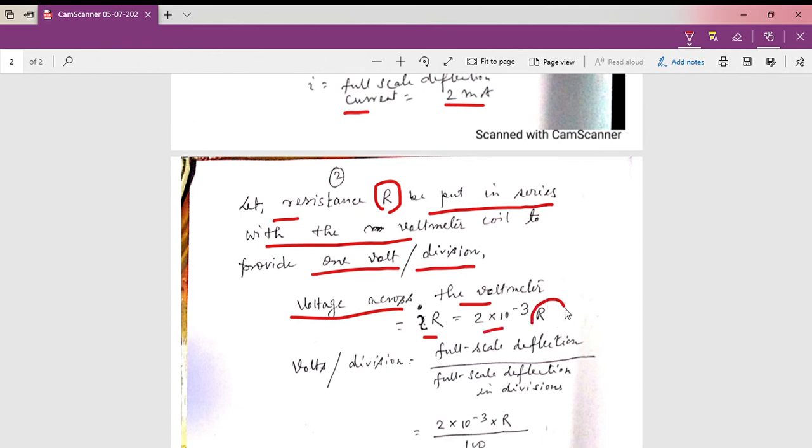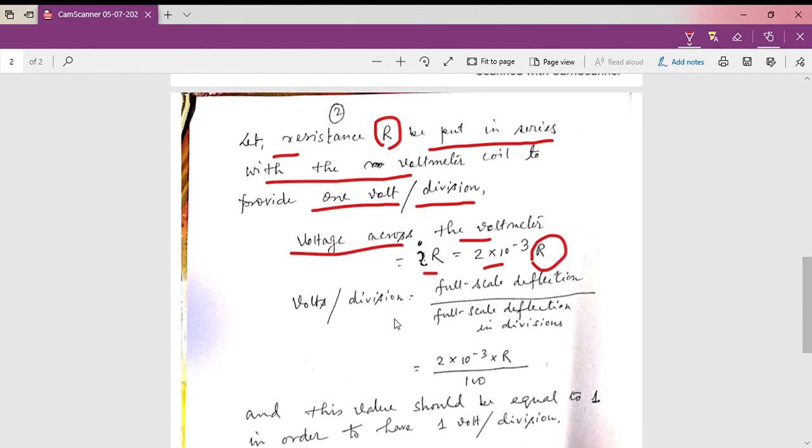Volts per division equals full scale deflection divided by full scale deflection in divisions. This is the basic formula. If we put the appropriate values in this equation, we get 2 into 10 to the power minus 3 into R divided by 100.